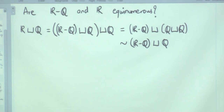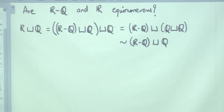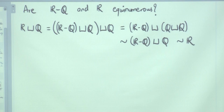Why should I write two copies? It is again countable, so therefore I can write one, and that is in bijection with the real numbers because I simply put those rational numbers back in. Yeah, magic.